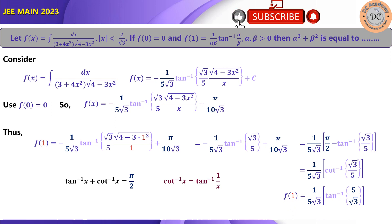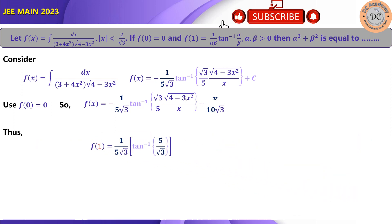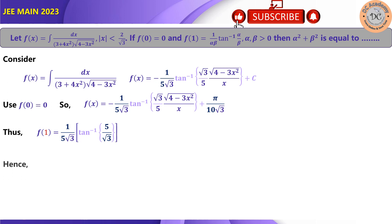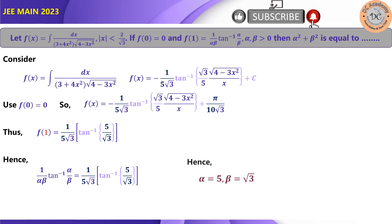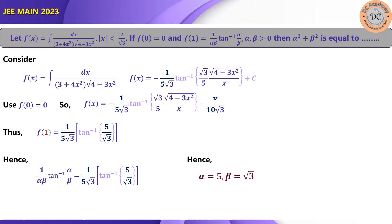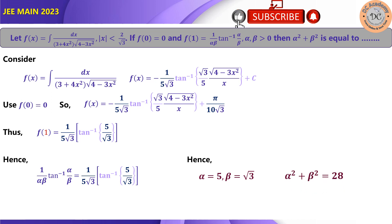We now have our result in the desired form: f(1) = (1/(5√3)) · tan⁻¹(5/√3). Comparing with the given form (1/(αβ)) · tan⁻¹(α/β), we identify α = 5 and β = √3. Therefore, α² + β² = 25 + 3 = 28. That's the correct answer for this problem.